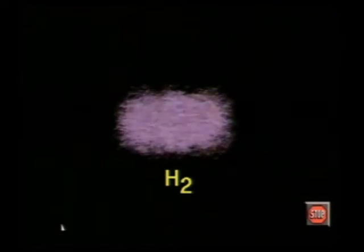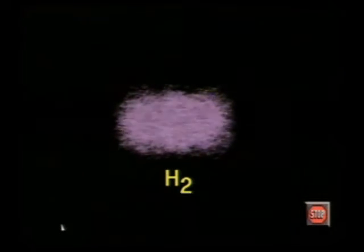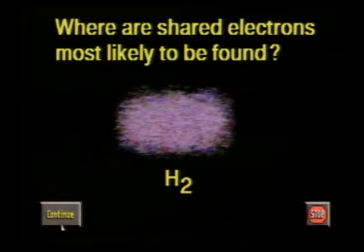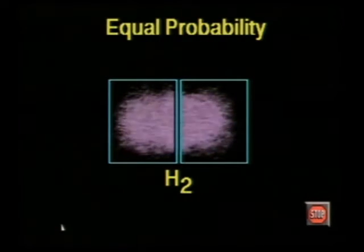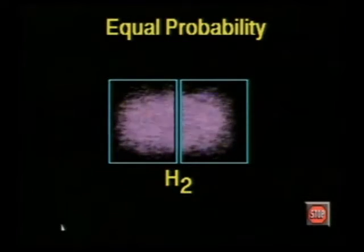Where are the shared electrons placed? Remember that in the quantum mechanical model of an atom, no definite boundaries exist for atoms — there are only probability distributions that represent an electron's probable location. Here is the probability distribution for a hydrogen molecule. Where would the bonding electrons in this molecule most likely be found? There is an equal chance that the electrons will be found near either atom, since they share electrons equally.